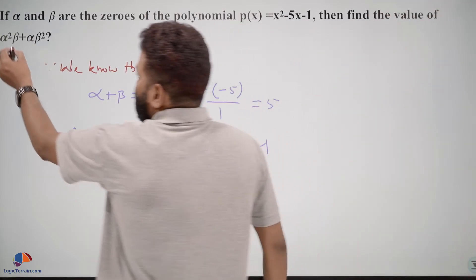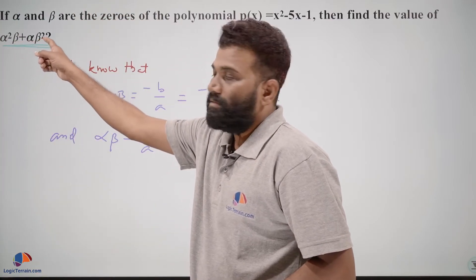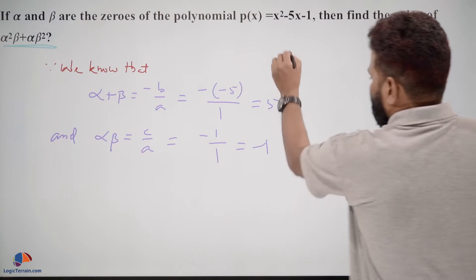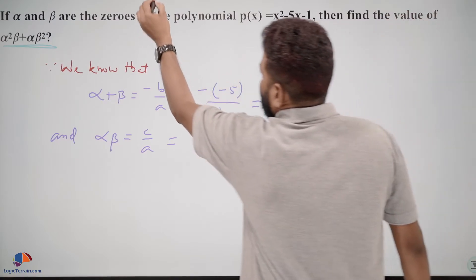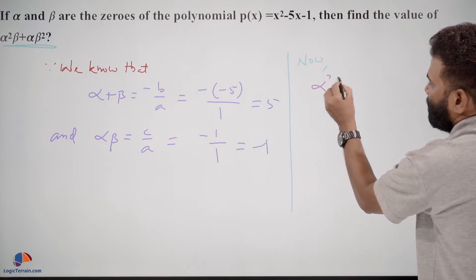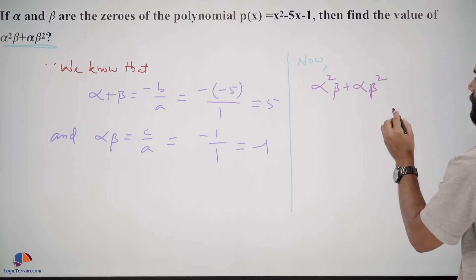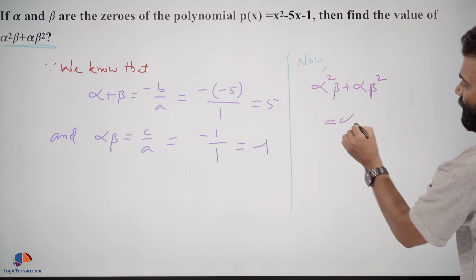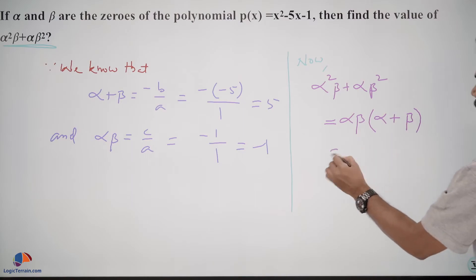We have to find α²β + αβ². Now, α²β + αβ² is equal to, we can take αβ common. If you take αβ common, you're left with α and here you're left with β. So it becomes αβ(α + β).